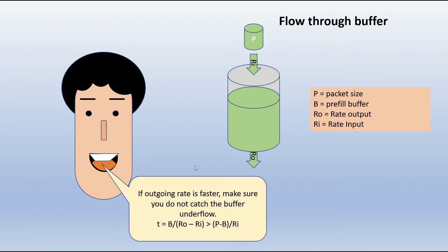Network Bob says that if the outgoing rate is faster, make sure you do not catch the buffer underflow. If this side is faster than this, you're going to catch up. If the packet starts coming in and you catch up, there is no data in the network buffer, and therefore the output will stall, which may be a problem.